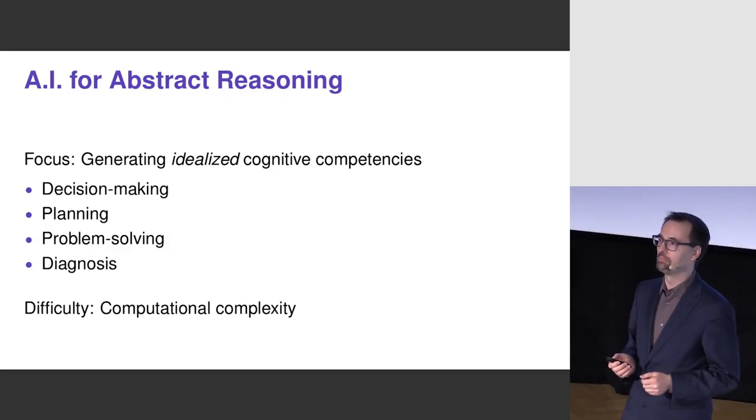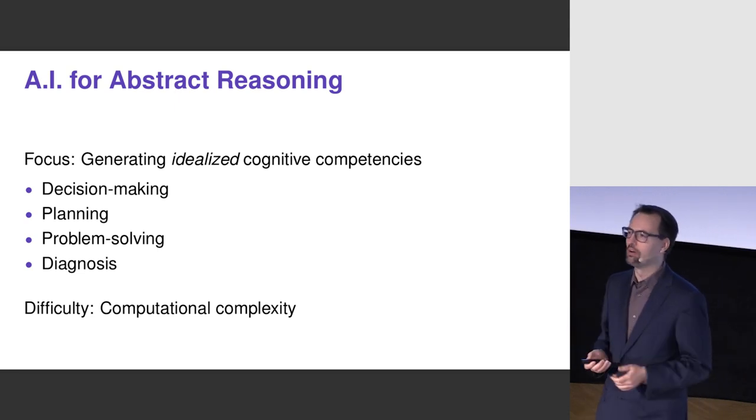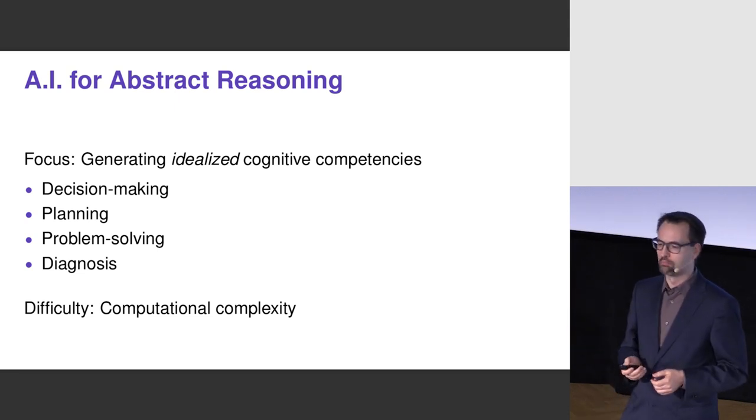For bigger cases, it's practically not possible to obtain the best possible solutions, and this is why this whole research area in AI has emerged — to try to do very complex decision-making, reasoning, and planning in a practical, useful way for the kinds of things that people try to do in the real world. This is the area I have been mostly looking at.